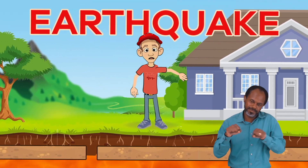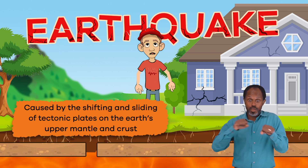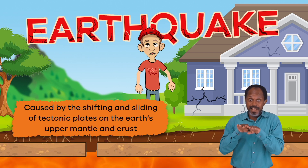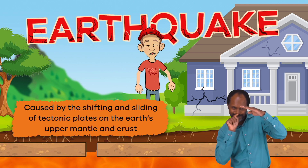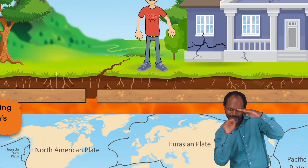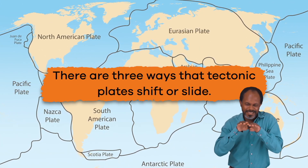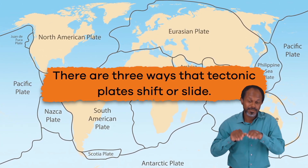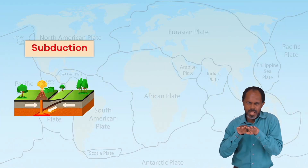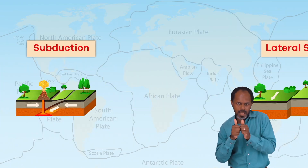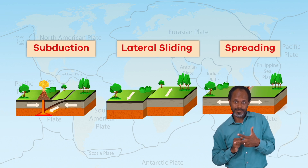So basically, an earthquake is caused by the shifting and sliding of tectonic plates on the Earth's upper mantle and crust. There are three ways that tectonic plates shift or slide: subduction, lateral sliding, and spreading.